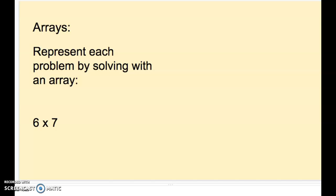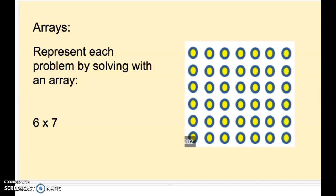Okay, let's go over this together. So six times seven, I know would be six rows, seven columns. So it's going to look something like this. Six rows, seven columns. And when I put this all together, six times seven equals 42.